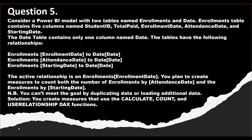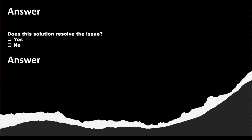Question number five: consider a Power BI model with two tables named Enrollment and Date. The Enrollments table contains five columns: student ID, total paid, enrollment date, attendance date, and starting date. The Date table contains only one column named date. The tables have the following relationships: Enrollments[enrollment date] to Date[date] — the active relationship — plus Enrollments[attendance date] to Date[date] and Enrollments[starting date] to Date[date]. You plan to create measures to count enrollments by attendance date and by starting date, without duplicating or loading additional data. The proposed solution is to create a measure using CALCULATE, COUNTA, and the USERELATIONSHIP DAX function.